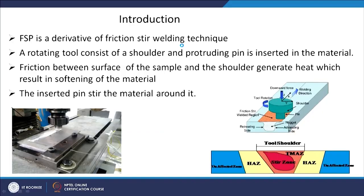Looking at the friction stir processing technique — it is a very simple technique. If you have a milling machine in your lab or department you can use it very easily. Basically you need a vertical milling machine. What it has is a tool which contains a shoulder and a pin. The shoulder is just touching the surface of the workpiece with a certain normal downward force, and the pin is actually inside the material.